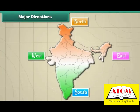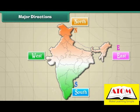There are four main directions. They are north, east, south, and west. The four letters N, E, S, and W represent these directions.